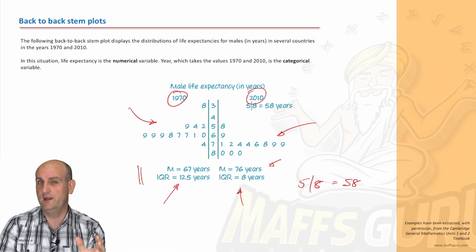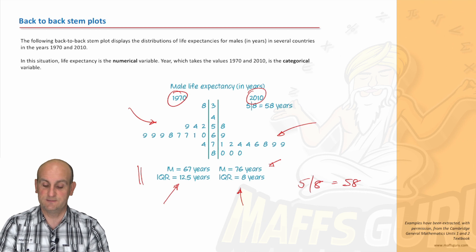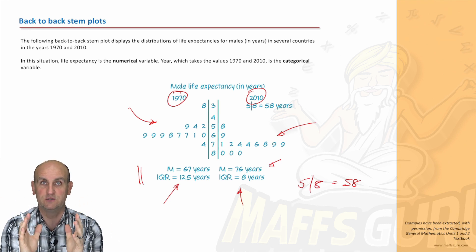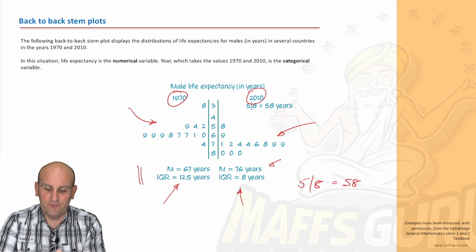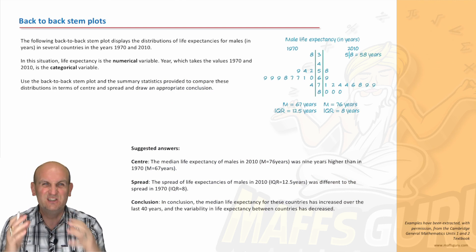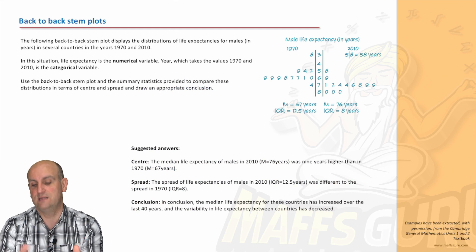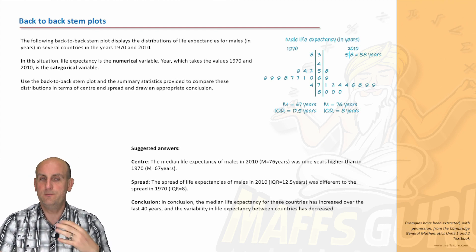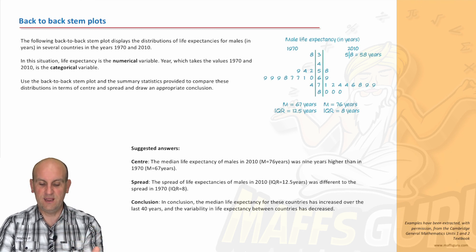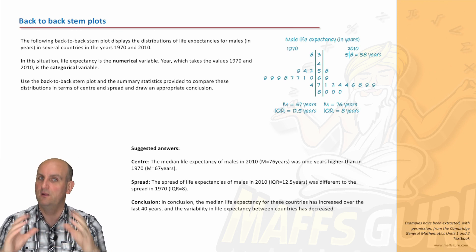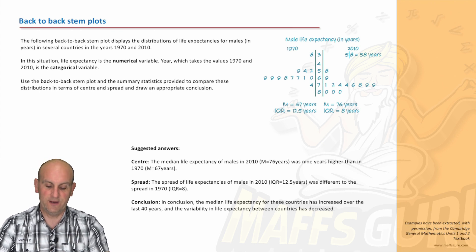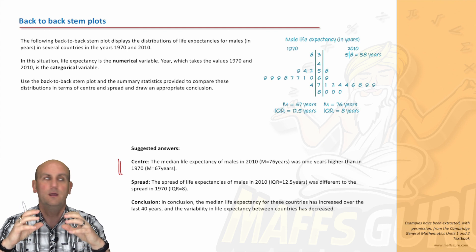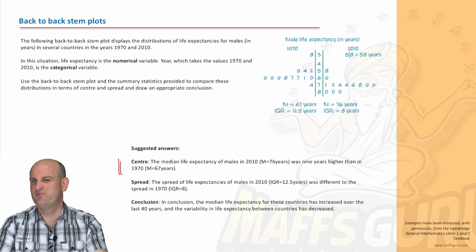Now, think about life expectancy. The longer you're living, would we want a short value or a larger value? Well, I don't know about you, but I want to live a little bit longer than 67 years. Interquartile range means the spread of the data. 12.5 years to 8 years. Now, a smaller interquartile range, in this situation, is actually really good. So I'm looking at the data, I'm looking at these values going, how am I going to use this in a statistical report? And I've got the values taken out of the Cambridge general maths textbook, and thanks very much, Cambridge, for letting me use your books, because they are awesome.